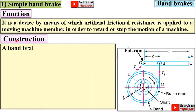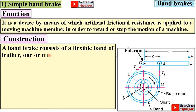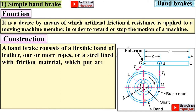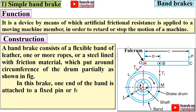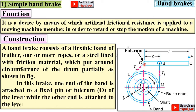For the construction, a band brake consists of a flexible band — here you can see this is the flexible band — of leather, or it can be one or more ropes, or a steel line with friction material, which is put around the circumference of the drum partially, as you can see from here to here.